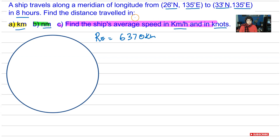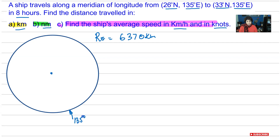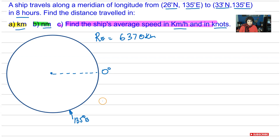We are also travelling on the meridian of longitude. We can see from the information that we have 135 degrees east at the start of our journey and we also finish our journey at 135 degrees east. So let's say this is our centre of the Earth, and this is just that one longitude that we travel in — the one that is 135 degrees east. We are going along that great circle, which means we have the radius of the Earth.